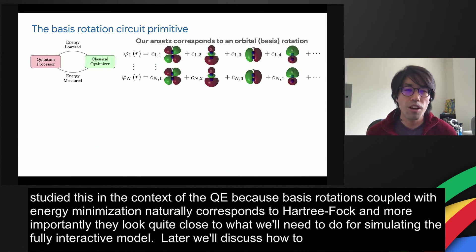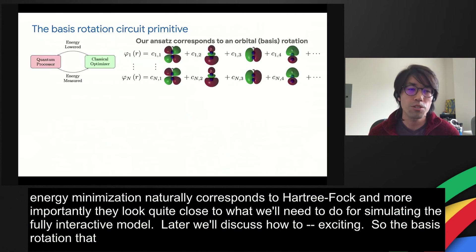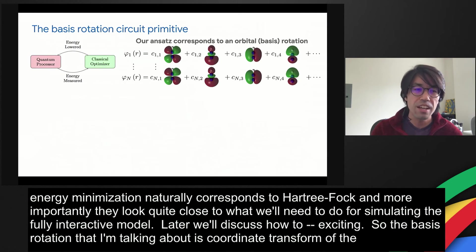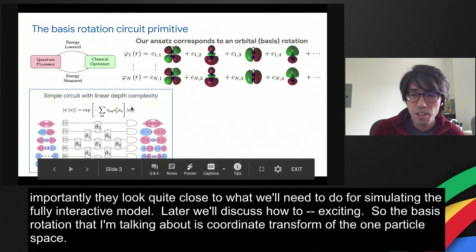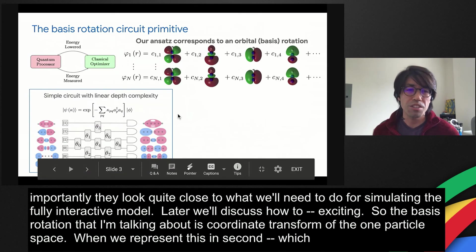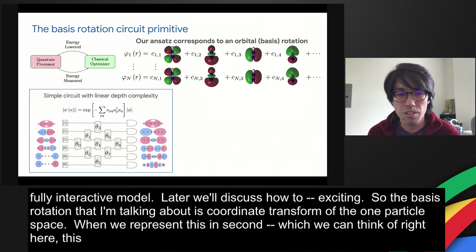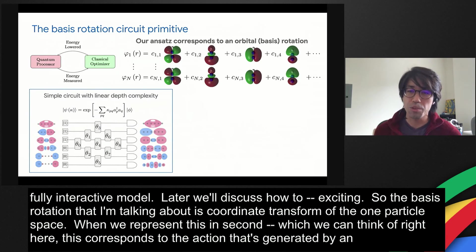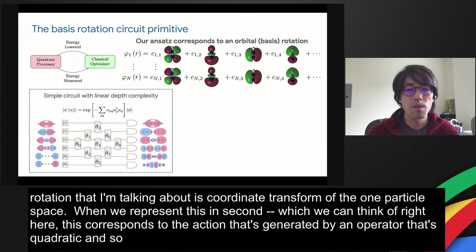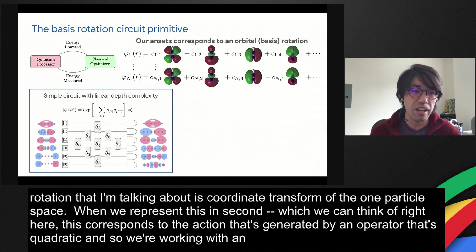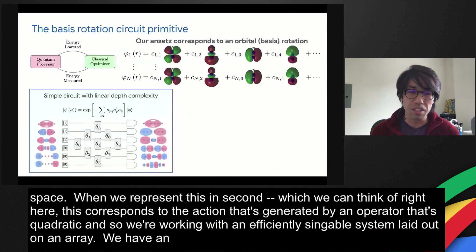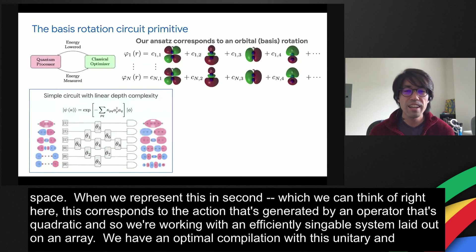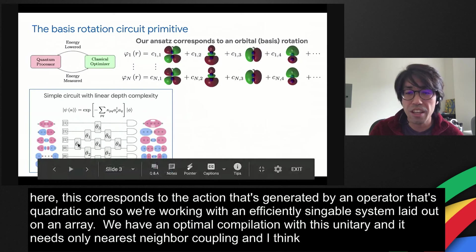The basis rotation that I'm talking about is a coordinate transform of the one particle Hilbert space. In chemistry, this corresponds to taking linear combinations of orbitals and forming a new basis. When we represent this in second quantization, this corresponds to the action of a unitary that's generated by an operator that's quadratic in many body order. We're working with an efficiently simulable system that can be laid out on a linear array with match gates. We have an optimal compilation for this unitary with no Trotter error, and it needs only nearest neighbor coupling.